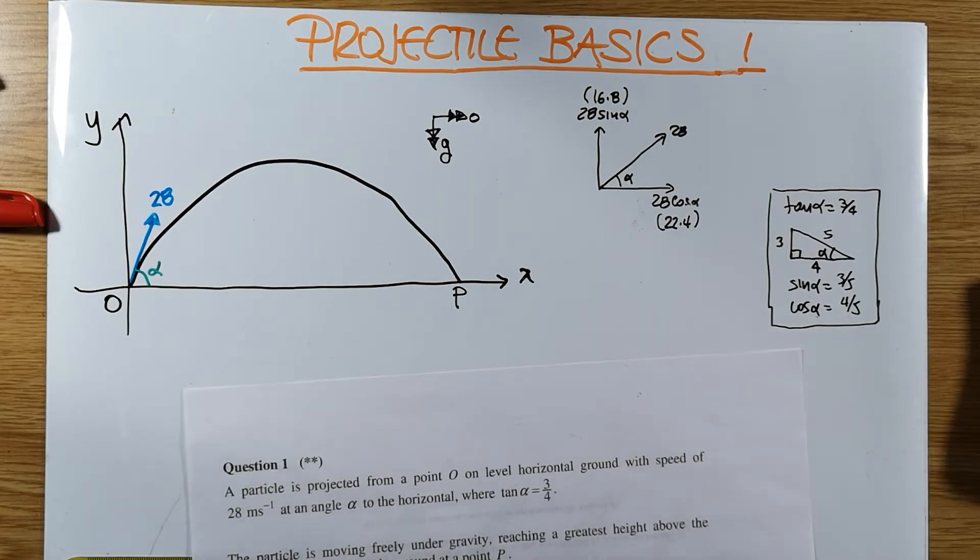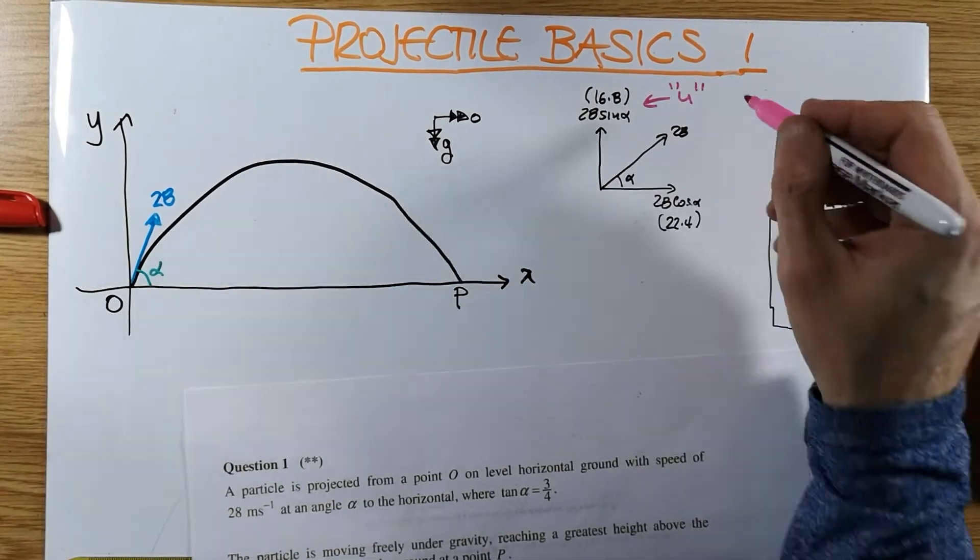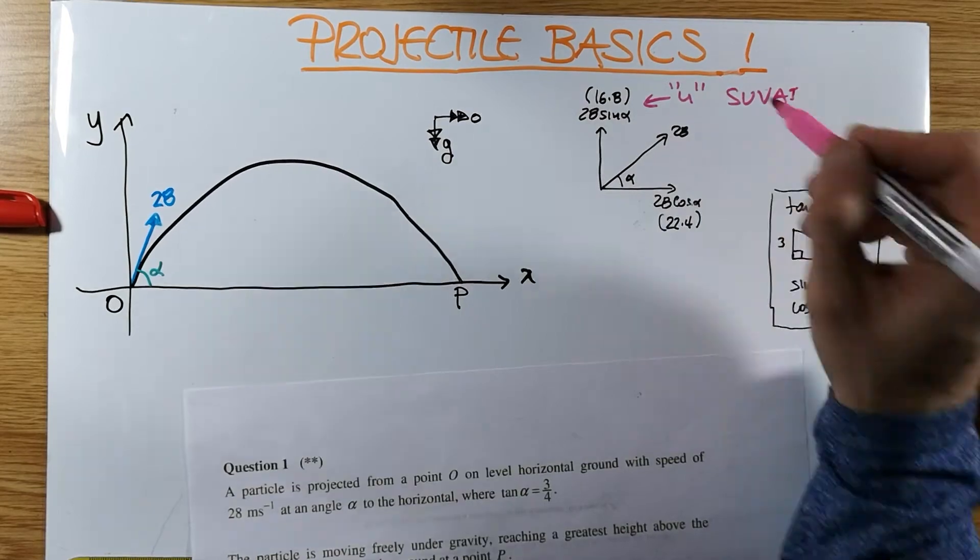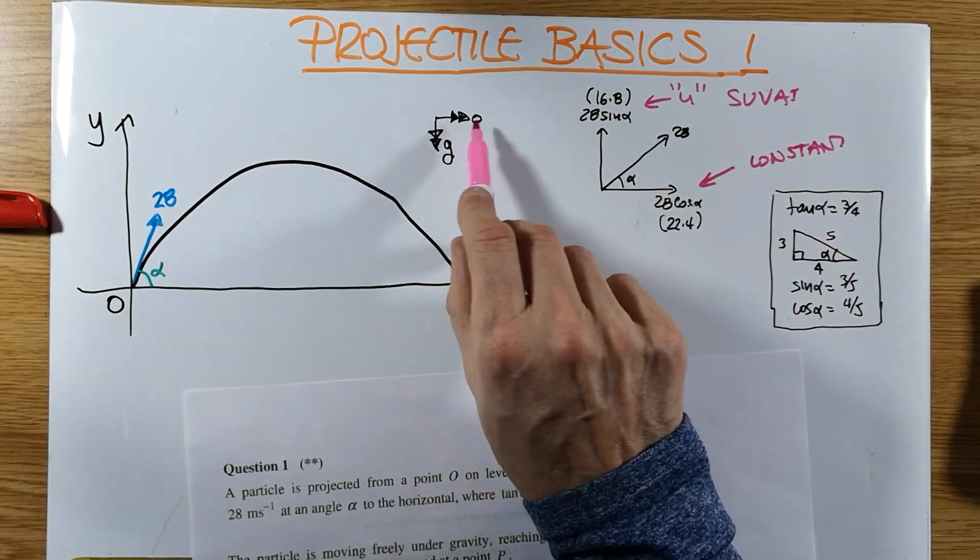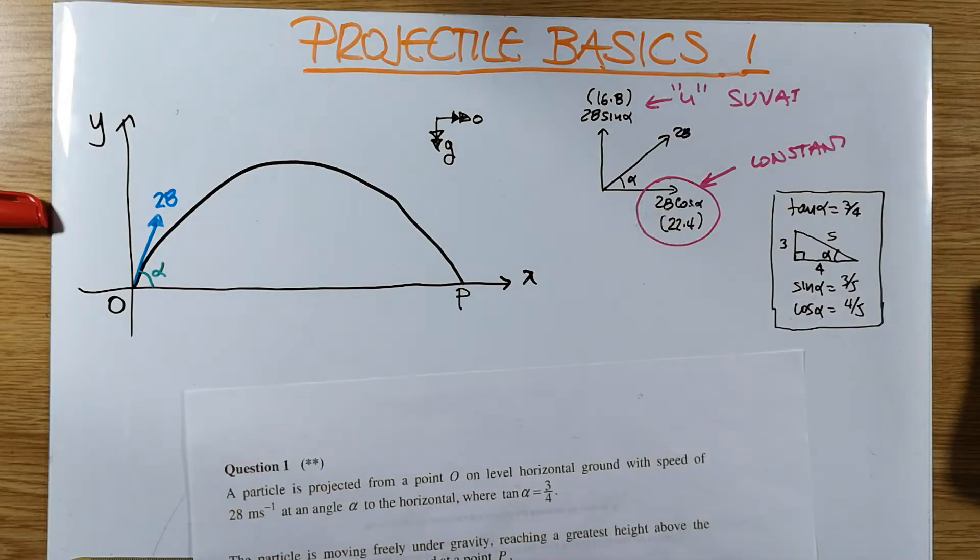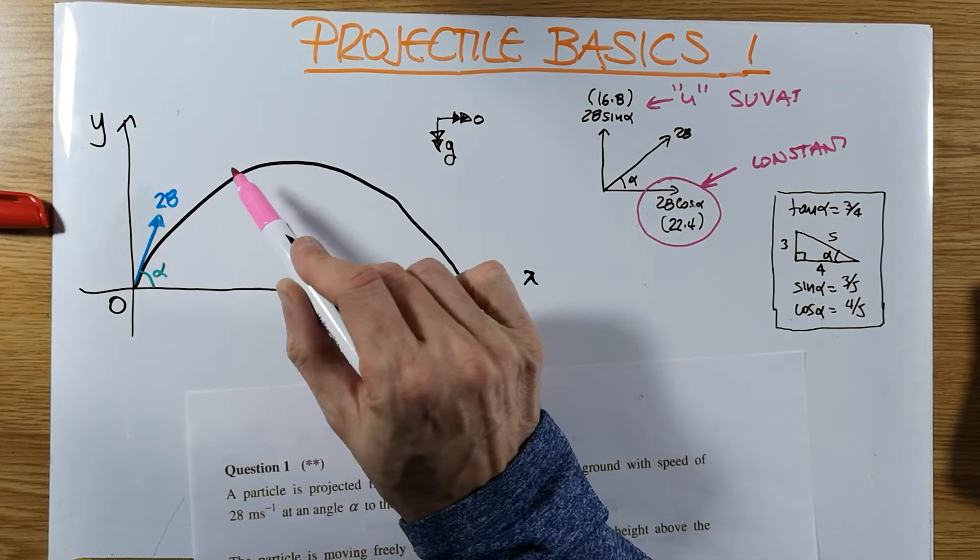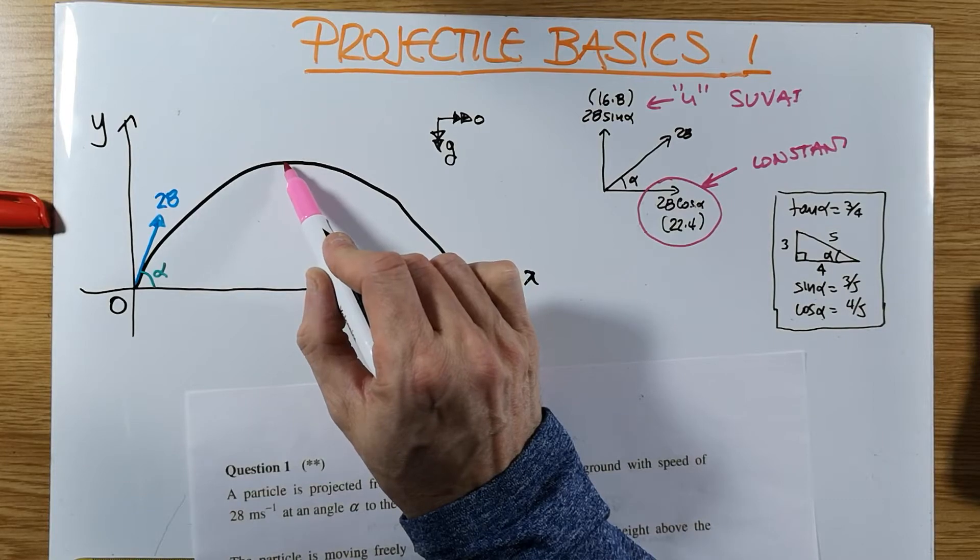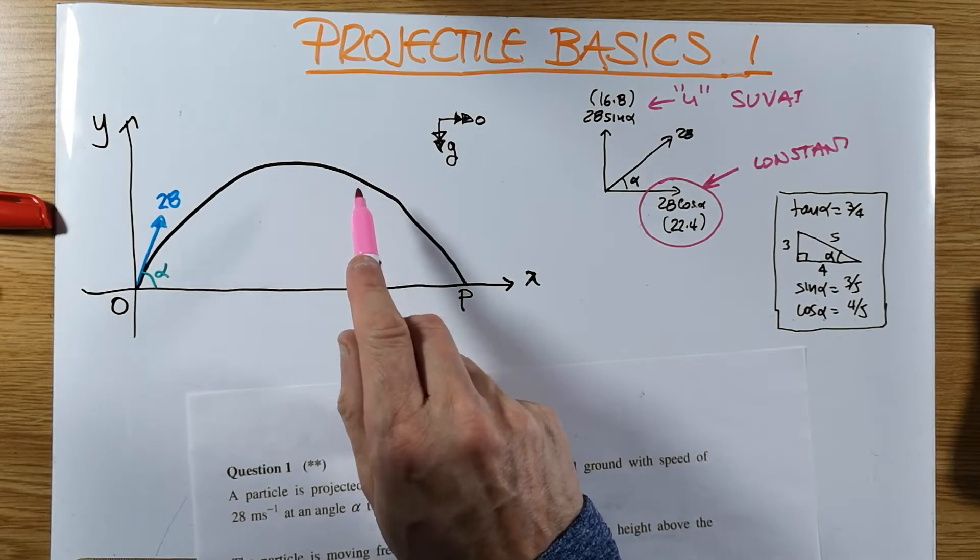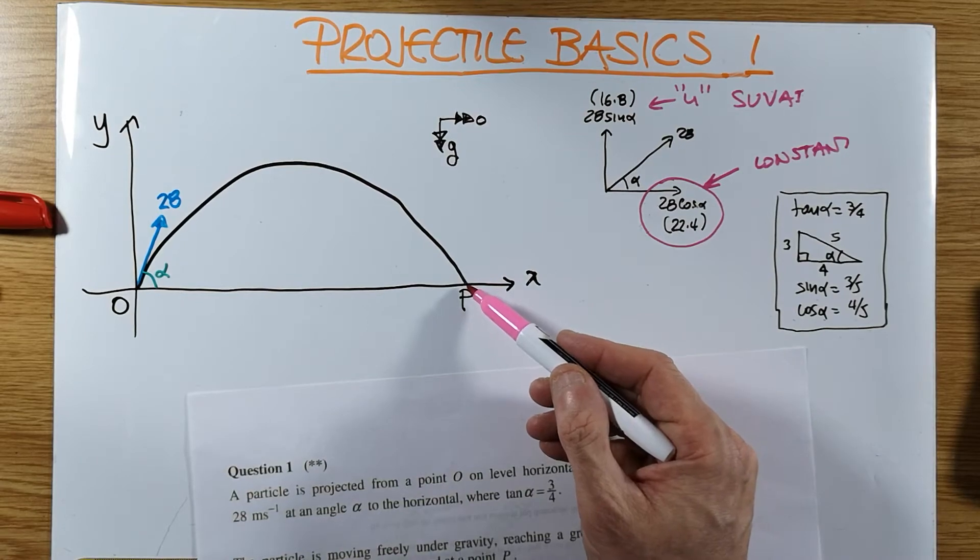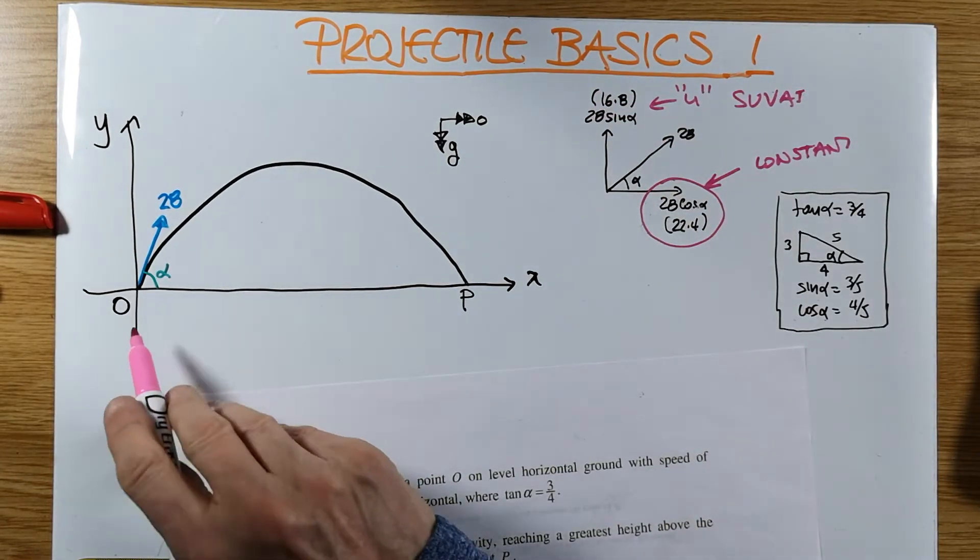At the moment, the significance of these quantities is as follows: This is your U in your SUVAT equations in the vertical, while this will be constant throughout the motion. This doesn't change because there's no acceleration to the right. It's forever 22.4. While this will start with 16.8, when the particle is there it'll be 15, 14, 9, 2. When it reaches the highest point, the vertical velocity will become zero. And then of course the velocity will be negative, it's pointing downwards. And by the time it hits back down to P, the velocity downwards will be exactly 16.8. That's if it's ground to ground.